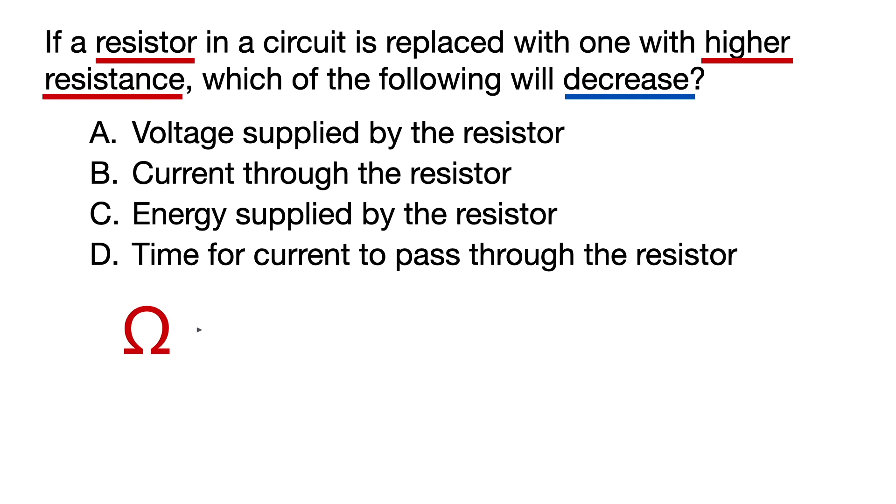The unit of resistance is ohms, and ohms always first breaks open into volts per amps. Volts is the unit of voltage, and amps is the unit of current. So let's start here and try to narrow down answer choices.